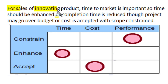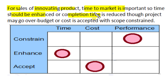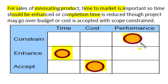For sales of a new innovative technology product in a competitive market, time to market is very important. So during development, the time criteria should be enhanced — meaning completion time should be reduced. In that condition, the project may go over budget, so cost is accepted, while the performance parameter or scope of the project remains constrained and unchanged from the planning phase. Time is enhanced with cost accepted.